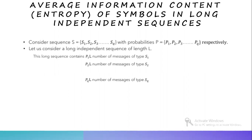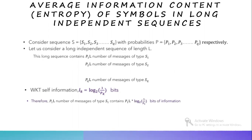This long sequence contains P1 into L number of messages of type S1, P2 into L number of messages of type S2, up to Pq into L number of messages of type Sq. The self-information of S1 is I1 equal to log of 1 by P1 to the base 2 bits. Therefore, P1 into L messages of type S1 contains P1·L·log(1/P1) base 2 bits of information.